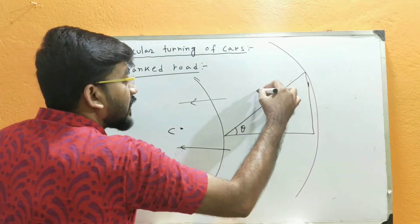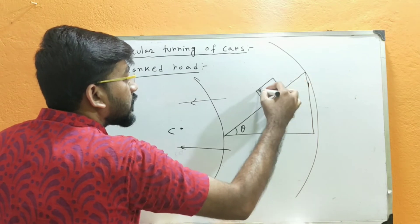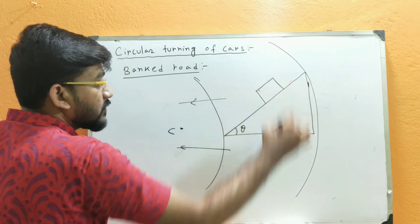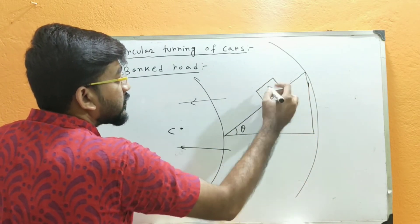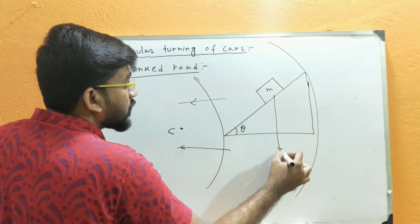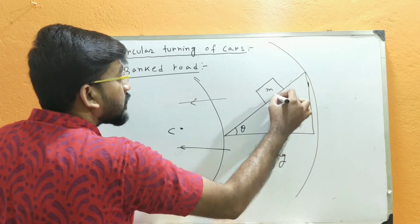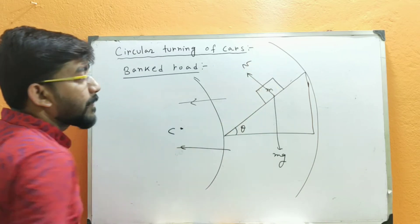If the car is here, moving like this on the road with mass m, then the mg force will act downward. And in this direction, the normal force will be N.